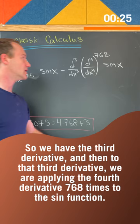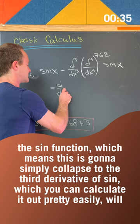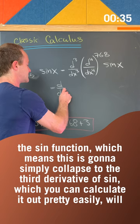But applying the fourth derivative once just gives you the sine function. That means applying it 768 times will still give you the sine function, which means this collapses to the third derivative of sine, which is minus cosine. And so that's our final answer.